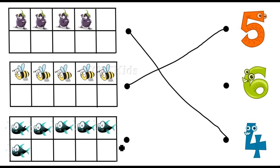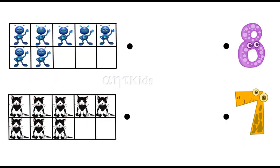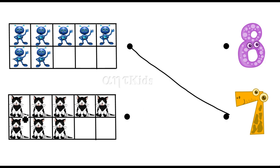How many fishes in this tens frame? One, two, three, four, five, six — six fishes in this tens frame. How many robots here? One, two, three, four, five, six, seven — seven robots here.